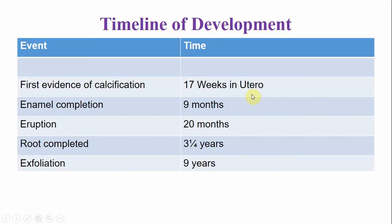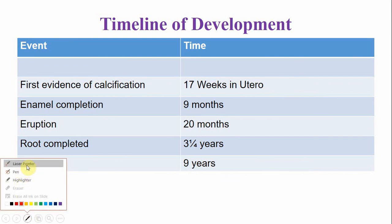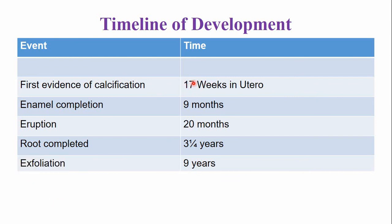The calcification of the mandibular deciduous canine begins before birth, at the 17th week in utero. The crown is completed by nine months after birth. This tooth emerges into the oral cavity by 20 months. The root is completed after three years, and the tooth is lost by exfoliation at nine years, at which point it is replaced by the permanent canine.